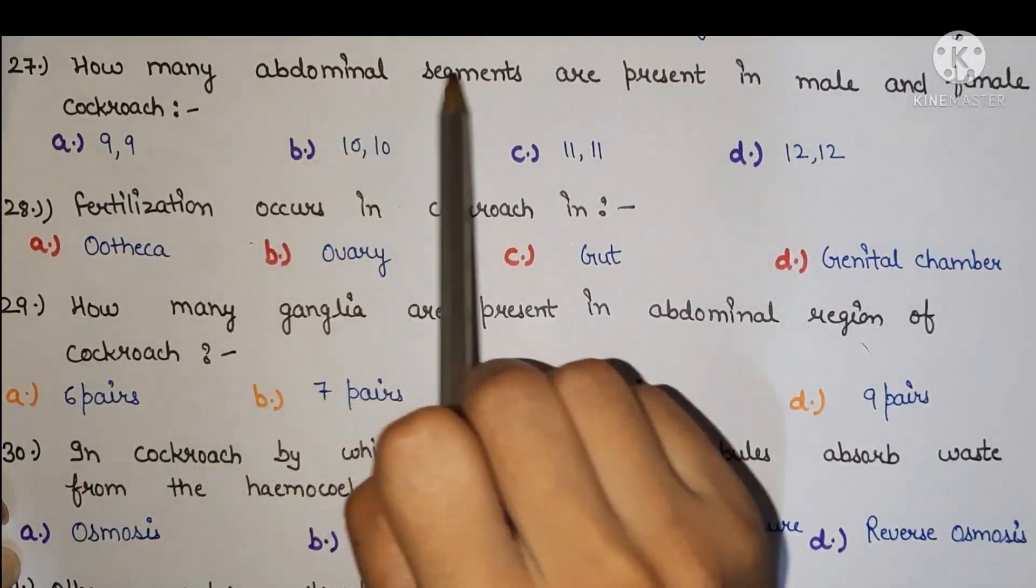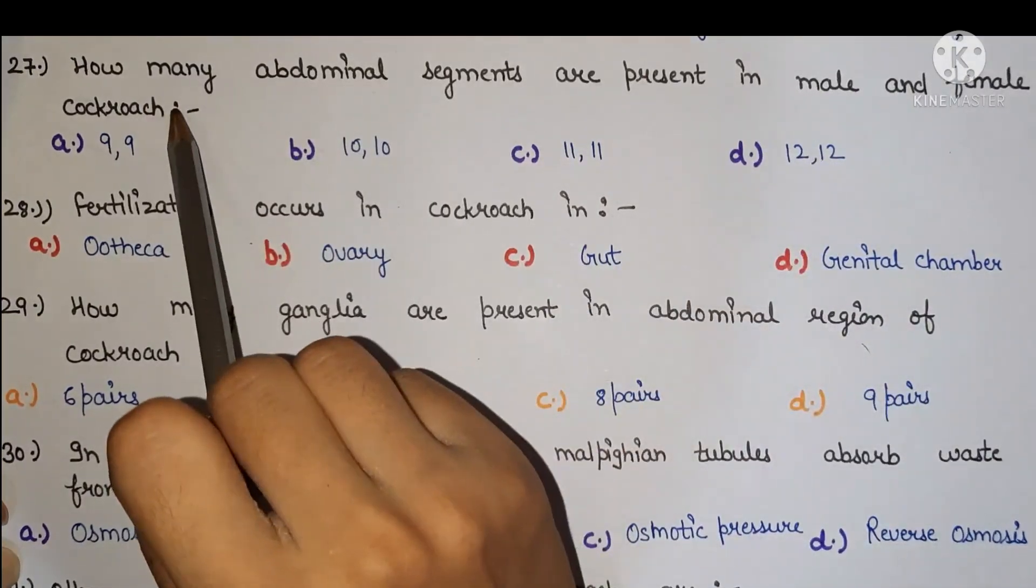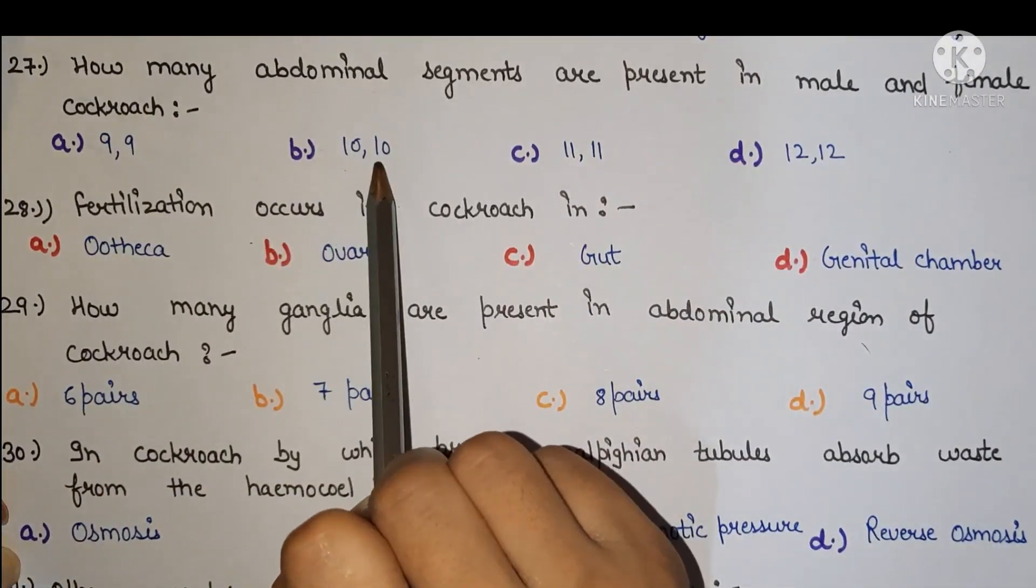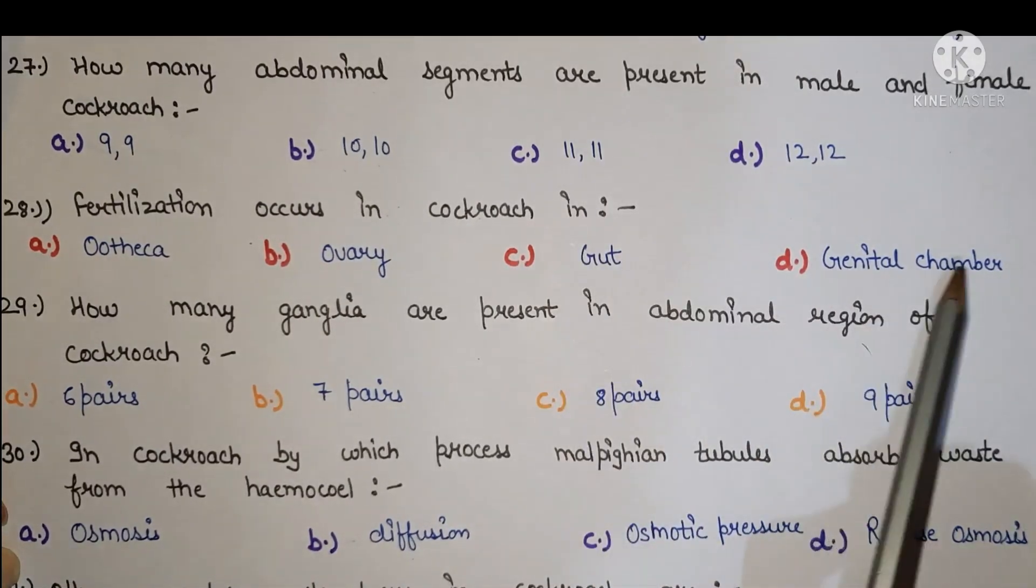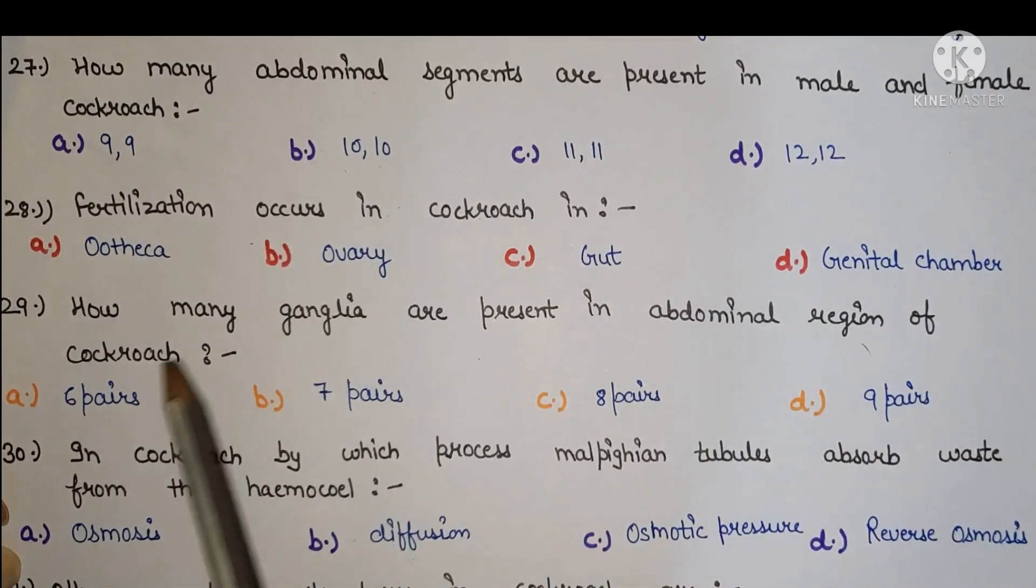Next, how many abdominal segments are present in male and female cockroach? The right answer is 10 and 10. Next, fertilization occurs in cockroach in genital chamber.